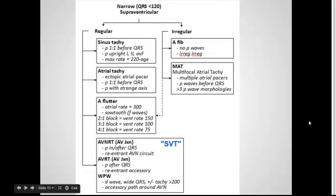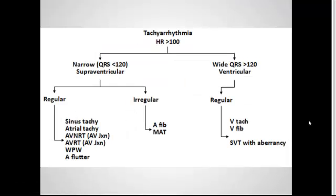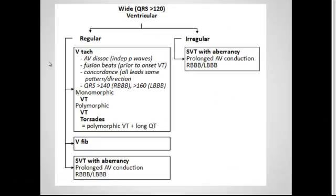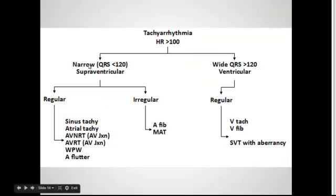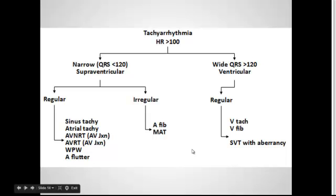Now we've covered our narrow supraventricular rhythms. Next, let's go to the other side — your wide QRSs. Here's the differential for wide complex tachycardia, QRS greater than 120, which is going to be a ventricular rhythm. Under the regular category you have VTach and VFib. I also want to point out that under both regular and irregular, you're going to have SVT with aberrancy — meaning any of the supraventricular narrow complex tachycardias we talked about, if they have aberrancy such as a bundle branch block, they're going to look wide. Always think: it can be VTach, VFib, or any supraventricular rhythm with aberrancy.